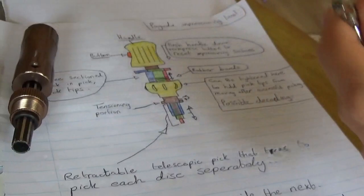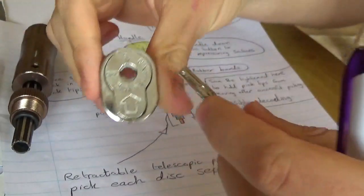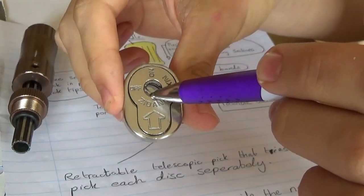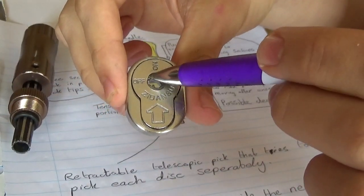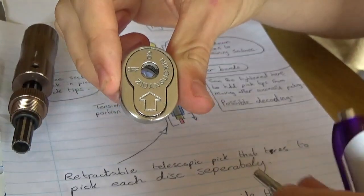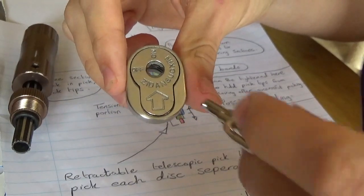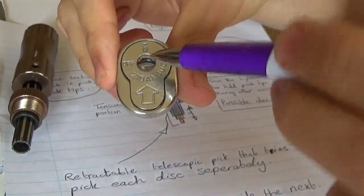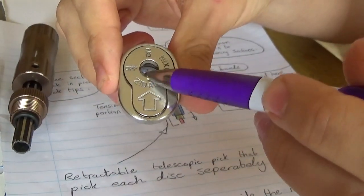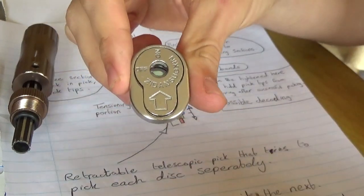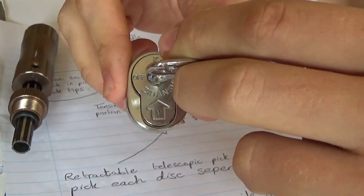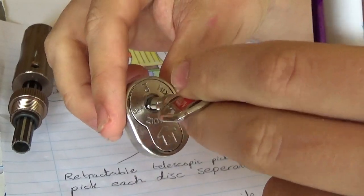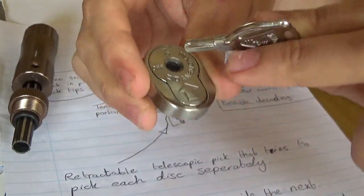I mentioned the tensioning head because of course, you can see on here, this is one of the key ways. We have the warding there on the front there that stops you from putting tension on with other tools. The tensioning portion has to move underneath this warding similar to a tubular lock.